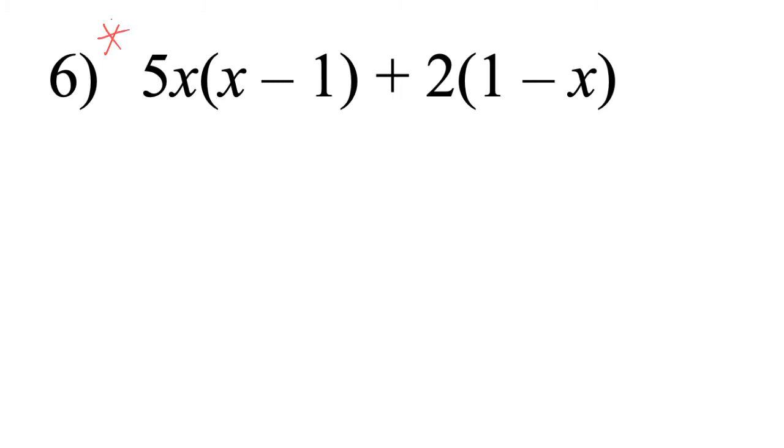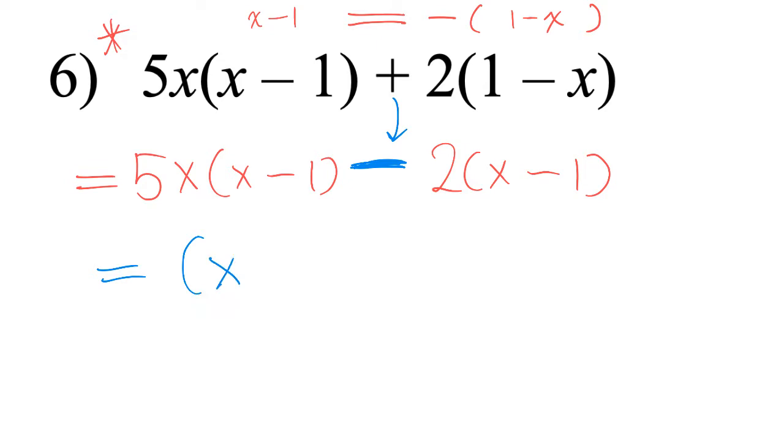So this one is very important. You can see that X minus 1 and 1 minus X, they are not the same. But they will become the same when you add a minus sign in front of 1 minus X like this. Therefore, here I showed you how we do it. We change it. You can see that now it becomes X minus 1. But this becomes negative. So then you can take out X minus 1. And then what remains? It will be 5X minus 2.